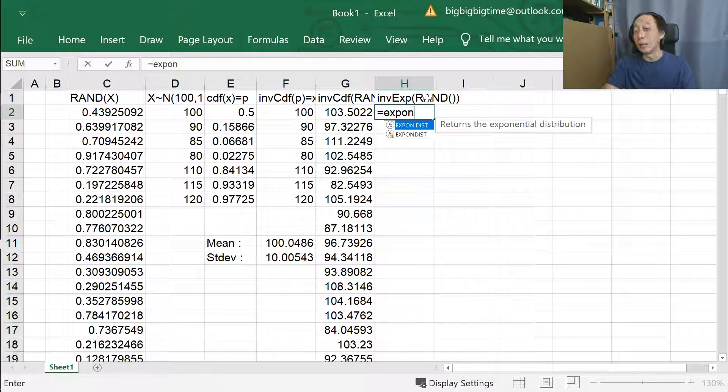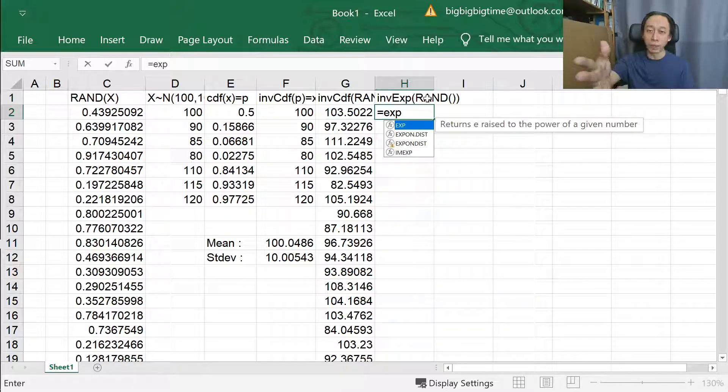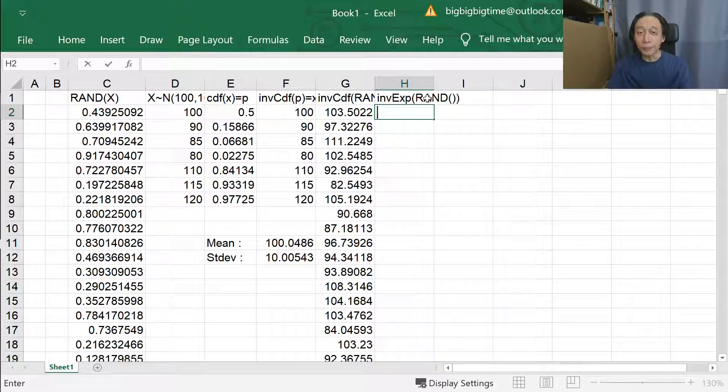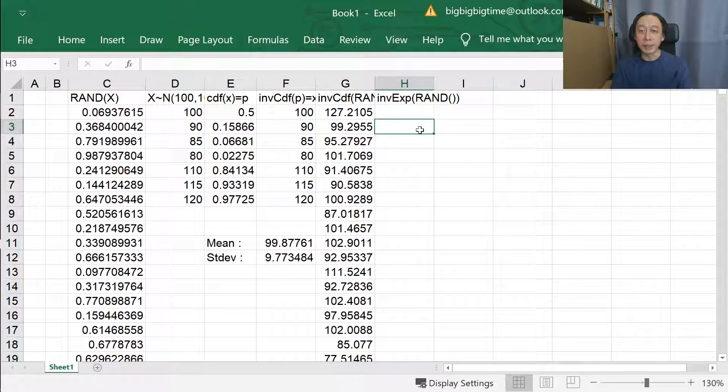In such cases, and there will be quite frequently such cases where the desired software for simulation, maybe you are using Python, R, or MATLAB. The desired platform to do simulation, most likely you will have RAND because all systems, all the hardware will have RAND. But it may not have the inverse CDF function for your desired simulation. So what are you going to do? This is what we are trying to learn here. The second technique is what we are trying to do.